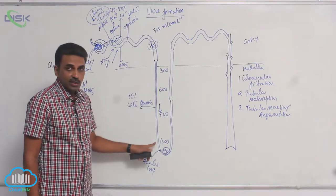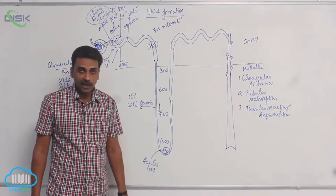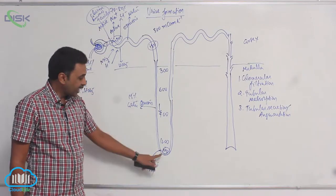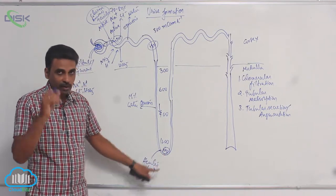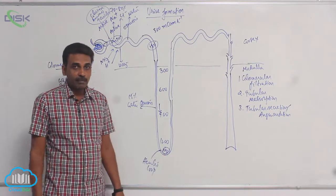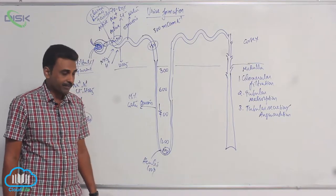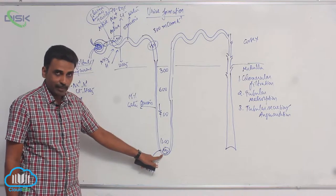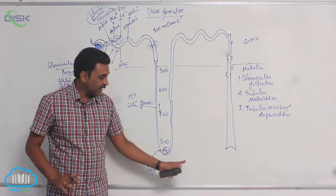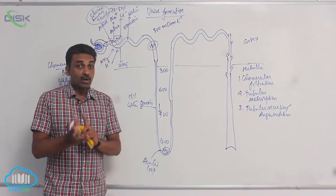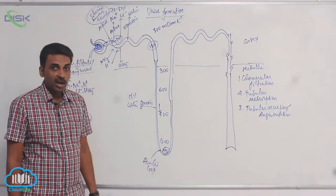When water is lost, the concentration of the fluid gradually rises. By the time it reaches the hairpin bend of Henle's loop, the concentration of primary urine becomes isotonic to the medullary fluid — that is, the concentration of primary urine inside the loop becomes equal to the concentration of medullary fluid outside. That is why it is called isotonic at that point.